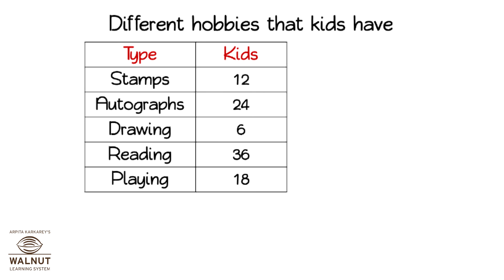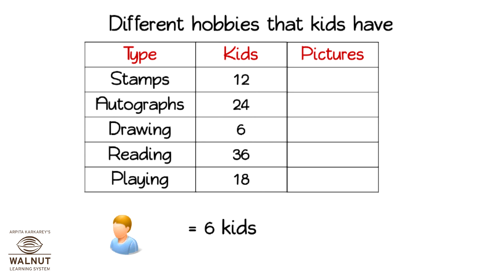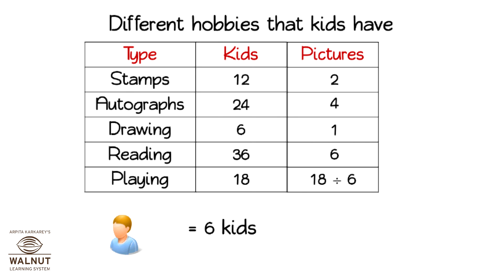Let us make a pictograph of the different hobbies that kids have. We have to make a pictograph of this data. We can choose a symbol. How many kids should one picture stand for? Look at the numbers of kids we have. Looking at the numbers, I would say one picture stands for 6 kids, because all these numbers are in the table of 6. Let us decide how many pictures we need to draw for each — we have to divide each entry by 6.